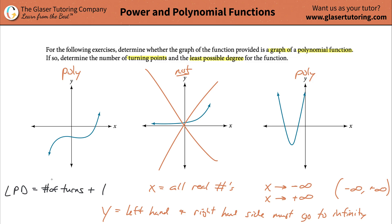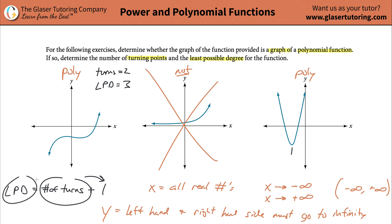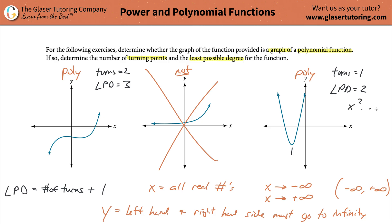So for this one I'll write: turns equals two, and then the LPD equals three. Now go to this one - start on the left hand side, work your way to the right. Notice you make one single turn. Add one to it - what's your least possible degree? It's two. It's an x squared type of function. So turns is one and the LPD is two. This would be some x squared function and that one is some x cubed function, and those should look kind of familiar.